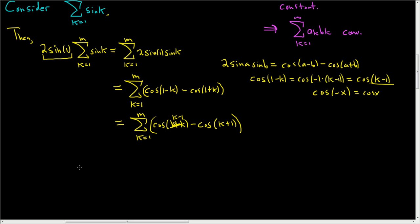Now we have to look for a pattern, so I'm going to write really small and carefully plug in numbers. Plugging in k = 1: we get cos(0) − cos(2). Plus, plugging in k = 2: cos(1) − cos(3). Let's do a couple more — plugging in k = 3: cos(2) − cos(4).